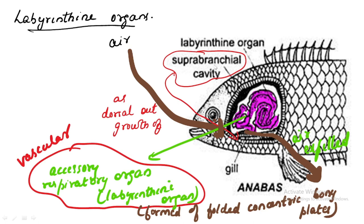The labyrinthine organ is also an additional accessory respiratory structure formed from the outgrowth of the gill chamber. From the gill chamber, a cavity forms externally called the suprabranchial cavity. In the suprabranchial cavity, from the first epibranchial bone, an accessory respiratory organ develops in the form of a highly folded concentric bony plate. This organ is also highly vascular.